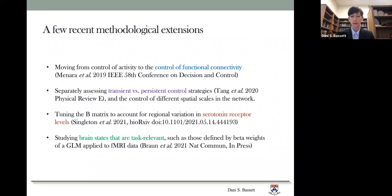Fourth and finally, I think it's particularly exciting to study brain states that are task relevant, so relevant for cognitive dynamics, such as those that are defined by beta weights of a general linear model applied to fMRI data. This is a really nice connection to cognitive function and understanding why that particular pattern of activation exists and how the brain got there and how it may move from one pattern of activation to another pattern of activation.